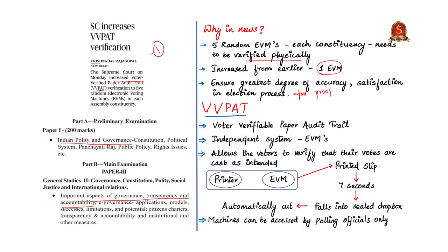Let us understand more about VVPAT. It stands for Voter Verifiable Paper Audit Trail. It is a method to provide feedback to voters — an independent verification printer machine attached to the electronic voting machines. It allows voters to check if the vote has gone to the intended candidate.